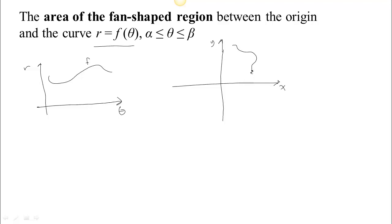If we have a starting angle alpha and an ending angle beta, then we have a pi-shaped piece of area — counting the area between the origin and the curve. Our question is: what's the area of this region? We want to be able to find the area of that region.